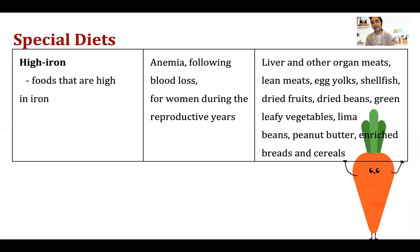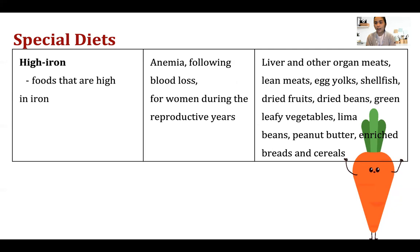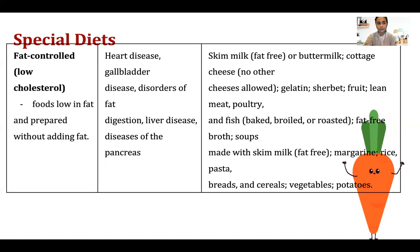Next is high-iron diet. Iron is very important in our blood — without iron, there is no hemoglobin, and without hemoglobin you will have anemia. That's why you need to increase your iron intake as treatment for anemia. Sources include liver and other organ meats, lean meats, egg yolks, shellfish, dried fruits, dried beans, and green leafy vegetables.